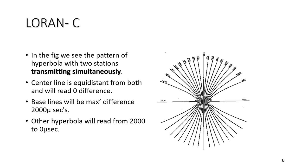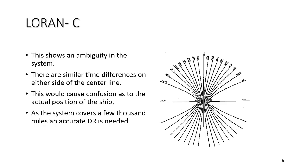The secondary coding delay also ensures that any ambiguity due to overlap of master and slave transmissions near the slave station is resolved. Thus transmissions are always received in the order: master first, then slaves. Further delays are introduced to subsequent slave transmissions to ensure that transmissions are always received in the same order wherever the operator is within the coverage of a particular chain. A chain comprises one master and two to four slaves.